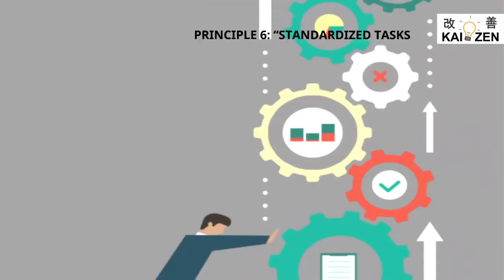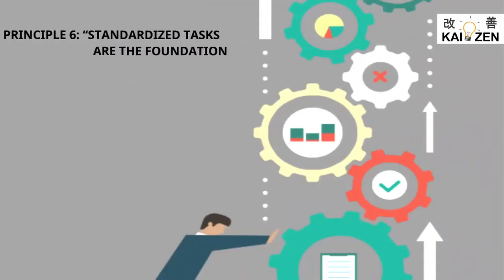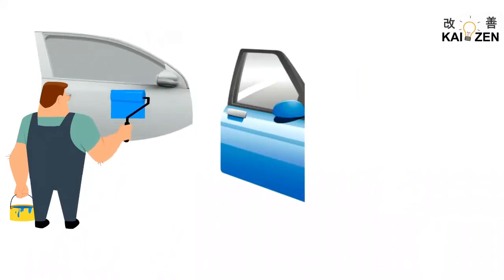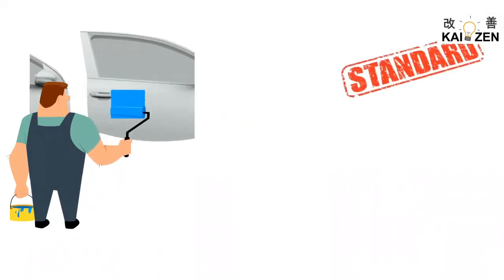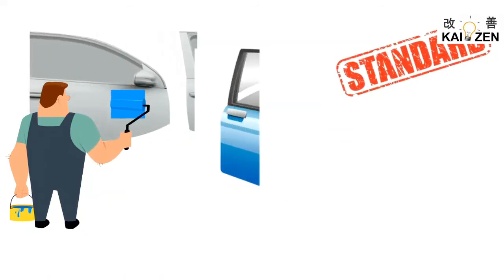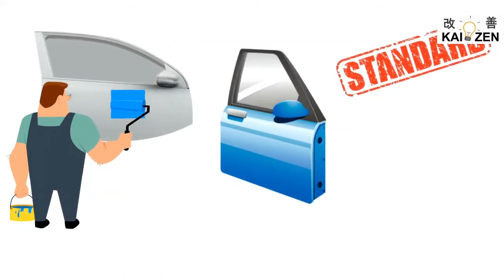Principle 6: Standardized tasks are the foundation for continuous improvement and employee empowerment. Every work has to be repeatable, and for that it has to be standardized. By capturing today's situation, the improvements till today are captured. Whenever the next level improvement happens, the standardization can again happen.